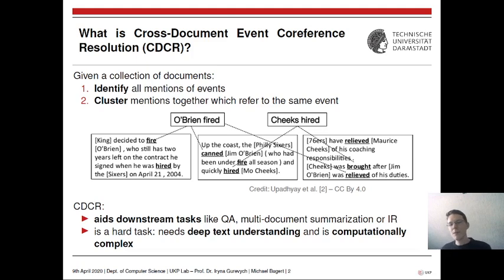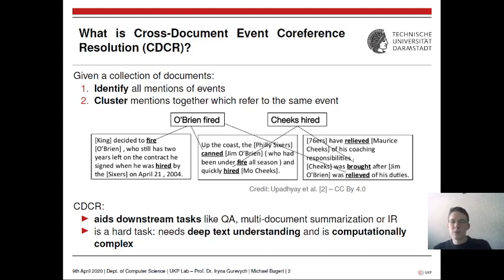It's also computationally complex. A typical approach is a mention-pair approach: one represents individual mentions as vectors and computes pairwise distances between all mentions as a basis for clustering. Computing distances between all pairs is O(n²) in big-O notation, so the effort rises quadratically with the number of mentions in the documents.